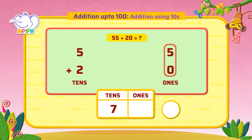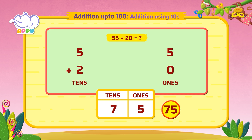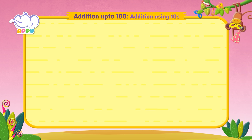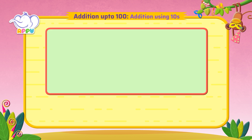And add the ones together — we have 5 ones. So the answer is 75. That's much, much better. What is 67 plus 32?